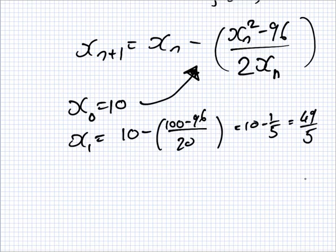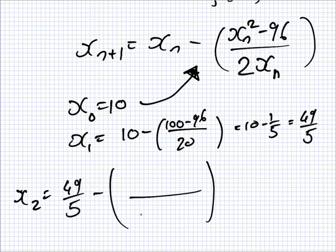So now for this one they want you to get x₂ as well. So x₂ would be 49 over 5 minus, twice 49 over 5, 49 over 5 squared minus 96.